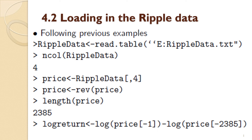Loading in the Ripple data. This works exactly the same way as the previous examples. What you would need to do is download the data from the Canvas page, save it to a USB stick — here the USB drive is drive E — and then read in the data using the read.table command, making sure that you have this file path exactly correct.